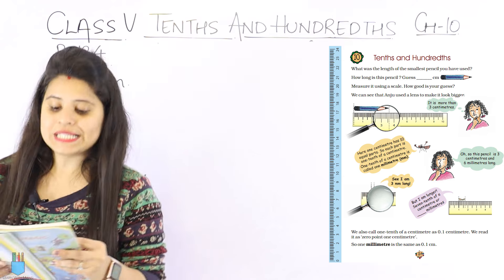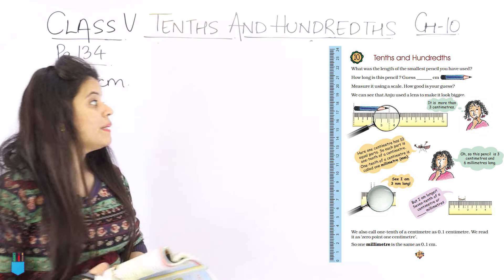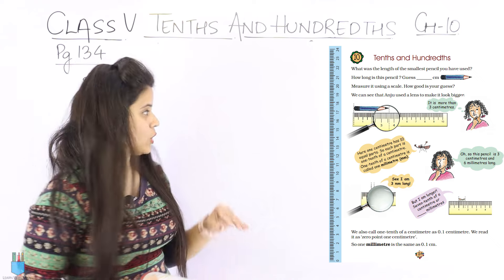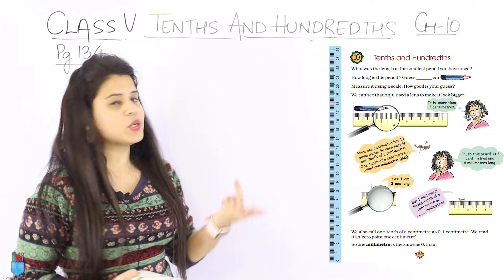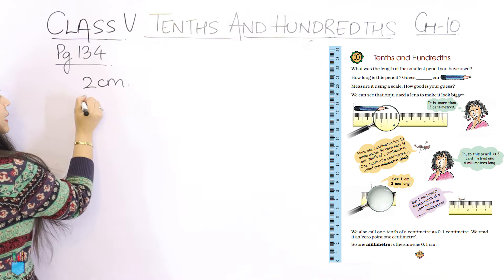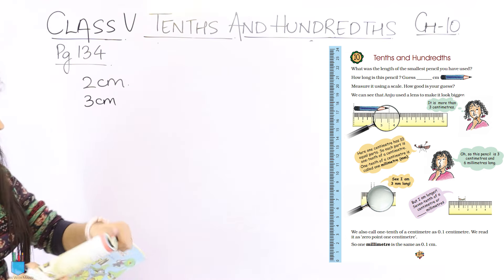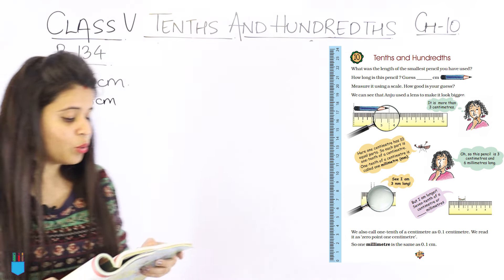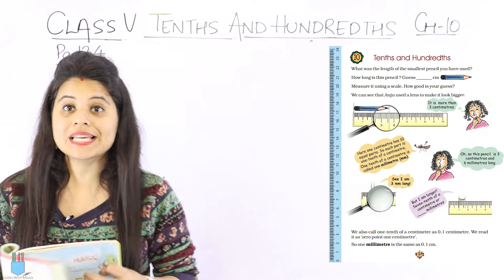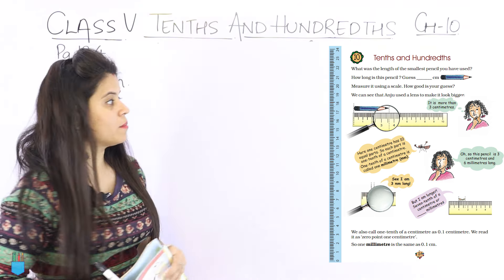How long is this pencil shown here? We have to guess how many centimeters this pencil is. 1 cm, 2 cm — random guess. I think it will be 3 cm. Now we have to measure it using a scale to see how good our guess is.